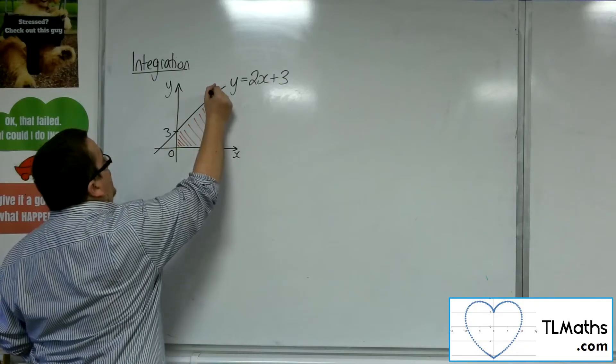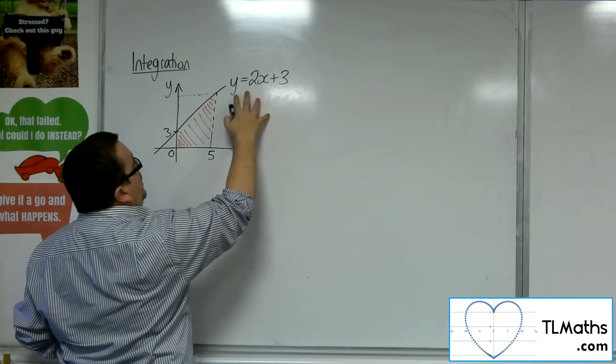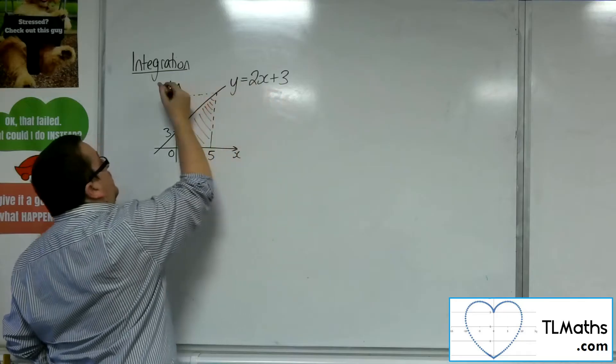So I'm going to need to know that height there, so I'm going to need to know that value. So that's when x is 5, so y equals 2 lots of 5 plus 3, so 10 plus 3, so 13.